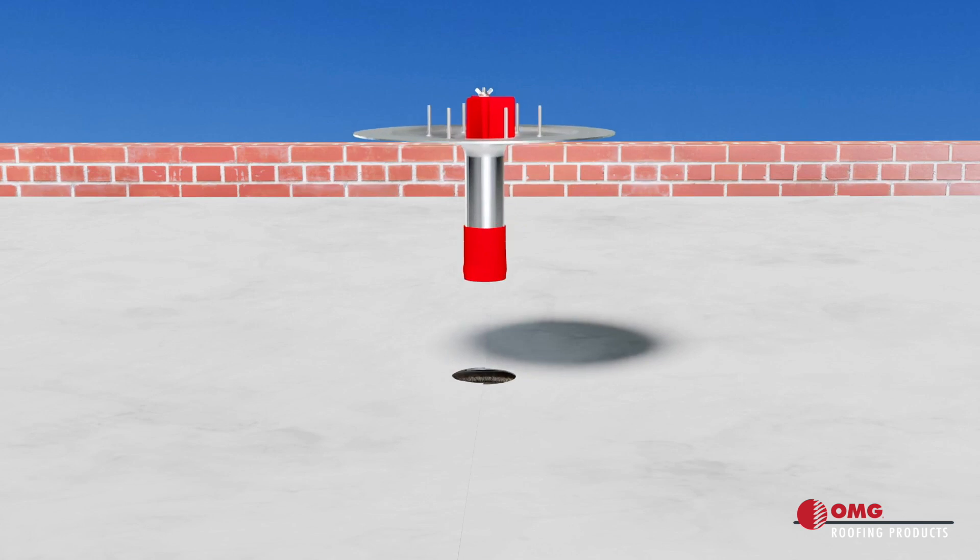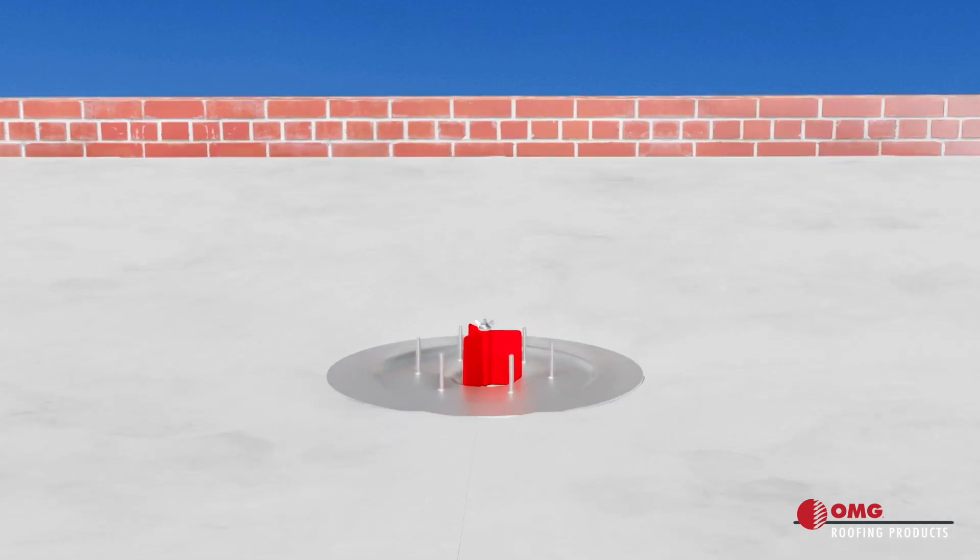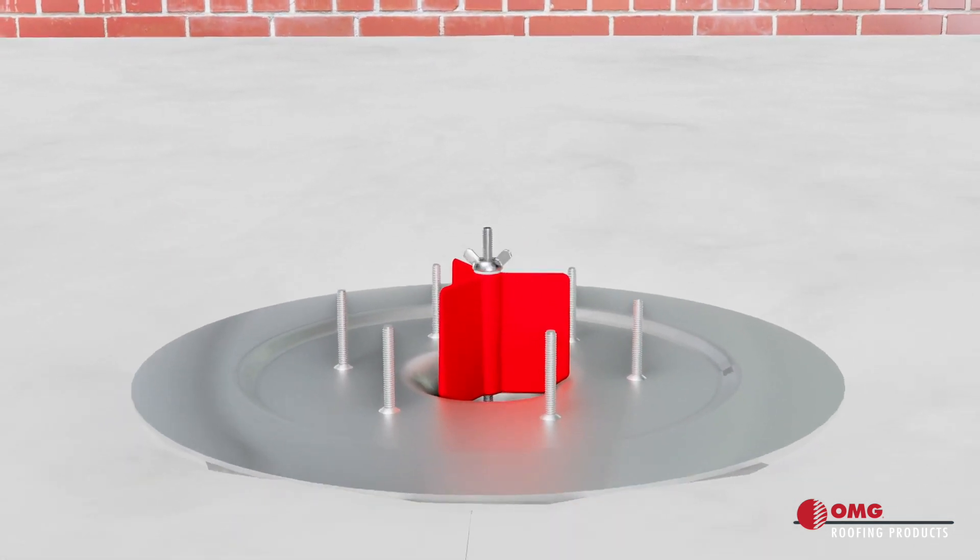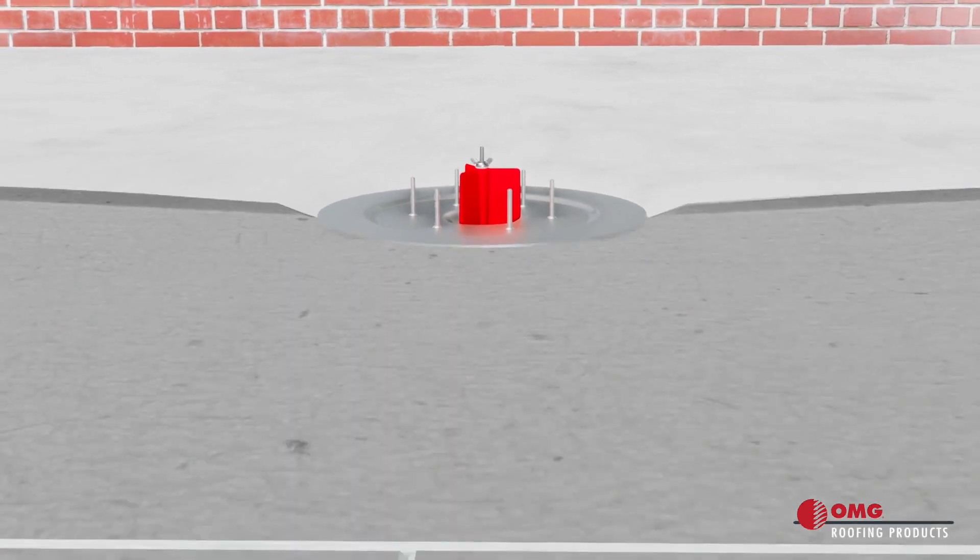Insert the drain into the existing leader pipe until the flange lies flush on the roof membrane. Tighten the wing nut on top of the OMG Red Vortex Breaker until hand tight.